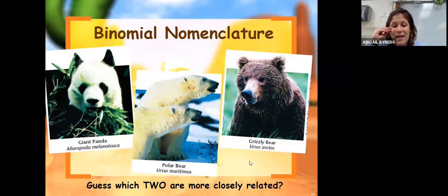Just by looking at the scientific names, sometimes you can tell which ones are pretty closely related. So guess which two are more closely related. Here are three bears we call them bears, but two of them are more closely related than the other. In this case, you can see it's going to be the polar bear and the grizzly bear because they're in the same genus. So these two are in the same genus called Ursus.